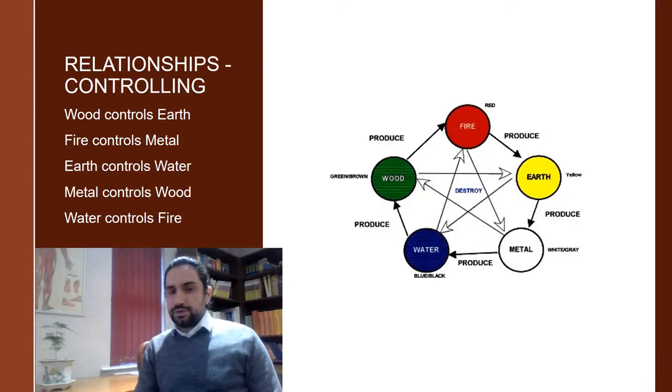Another relationship that is normal within the theory of five elements is that of controlling. Without control, without restriction, things would develop without any limits, without any way of stopping, and that would lead to abnormalities, that would lead to excess. So in contrast with the idea of generation, which is an increase, one increases the function of the other, the relationship of controlling is where one element decreases the function of the other.